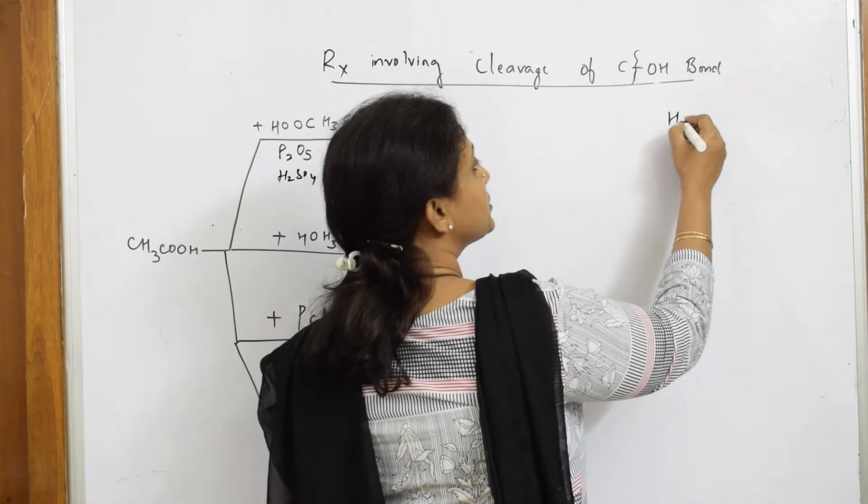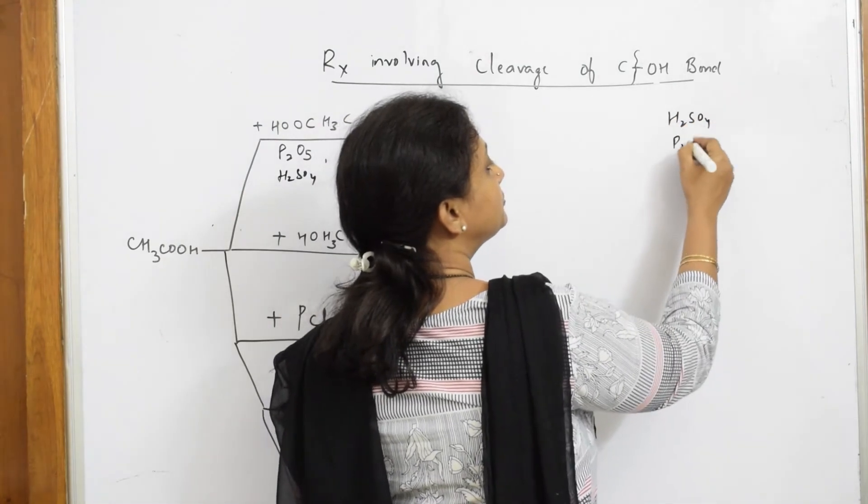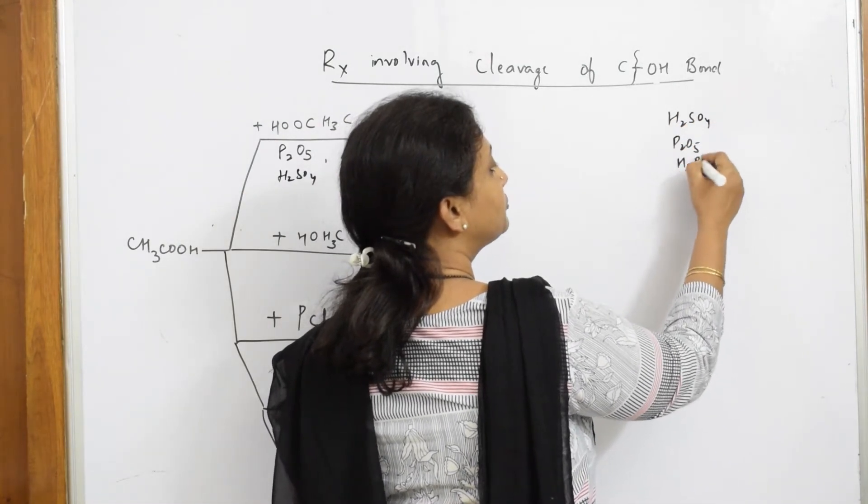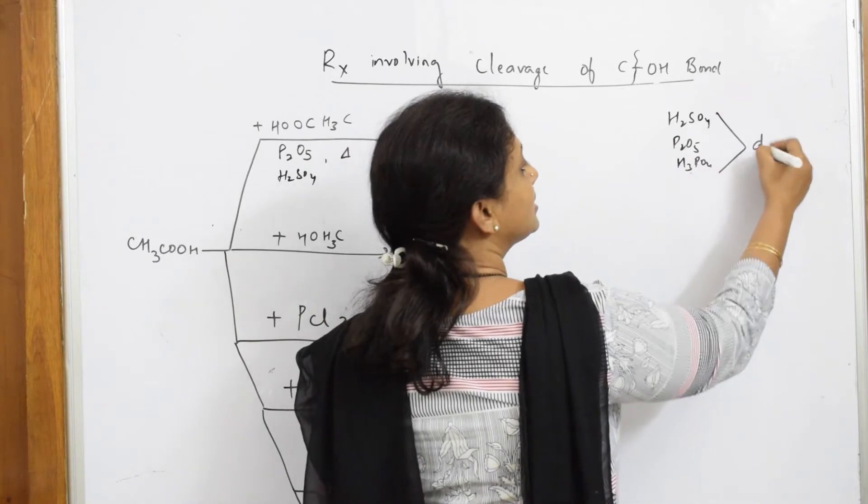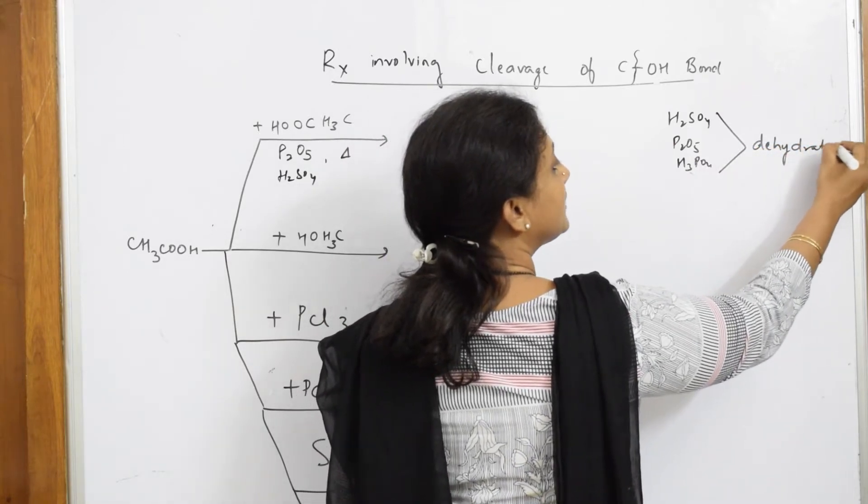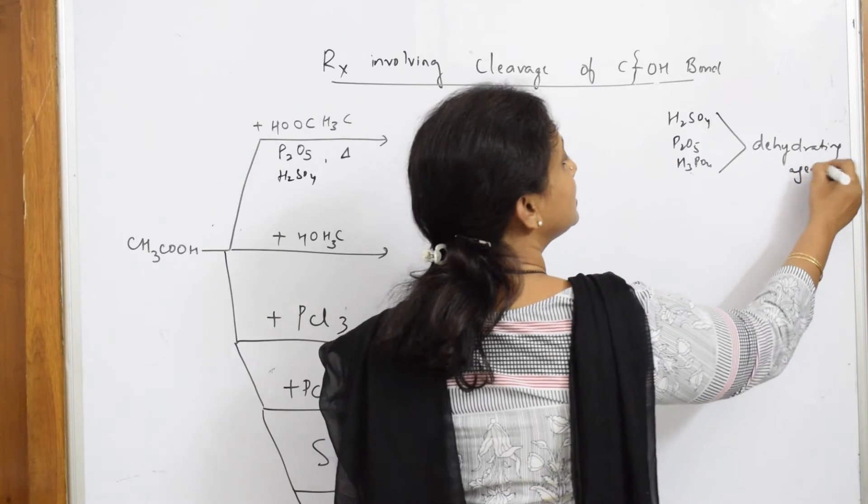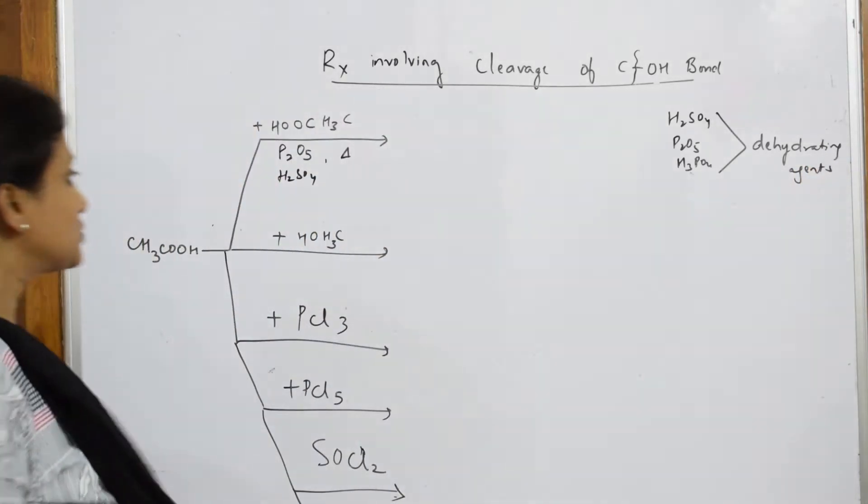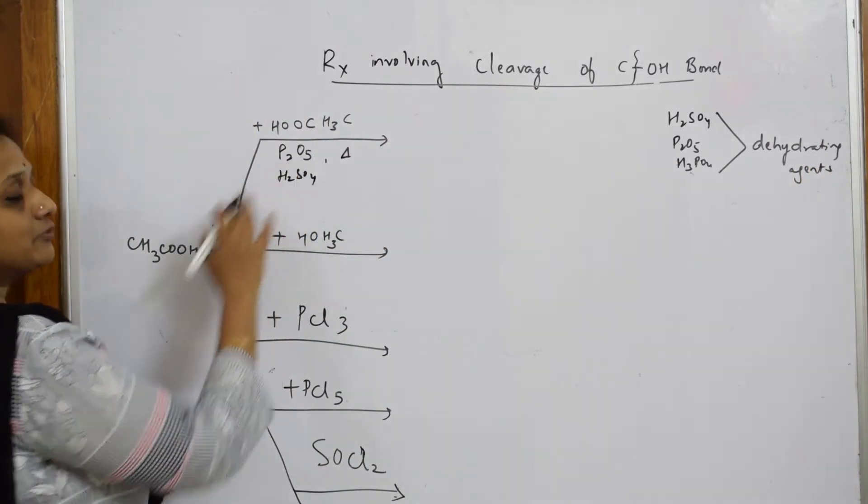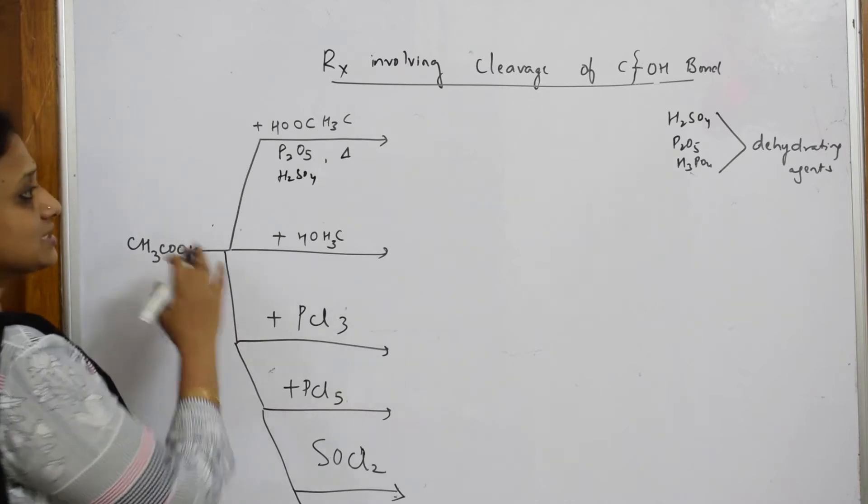Let us write H2SO4, P2O5, H3PO4 - all these are dehydrating agents. They have to remove water from the particular reaction. Now we have P2O5 phosphorous pentoxide. How does this reaction look?